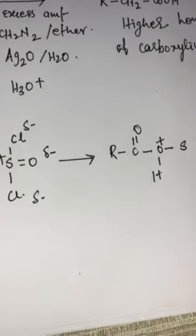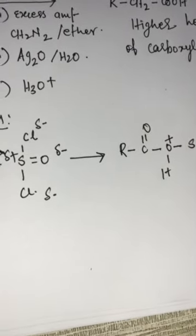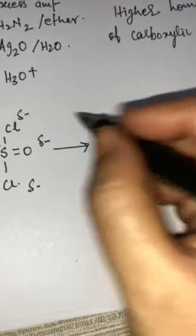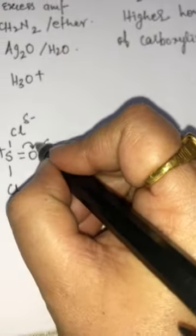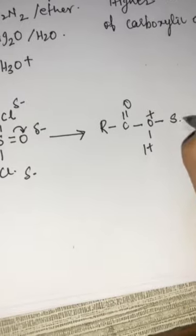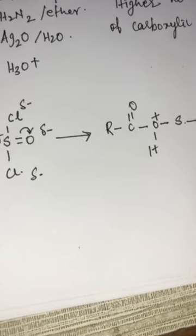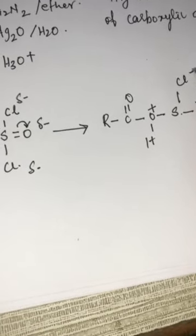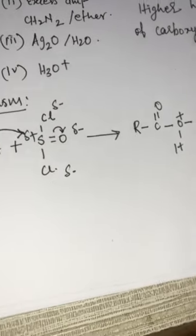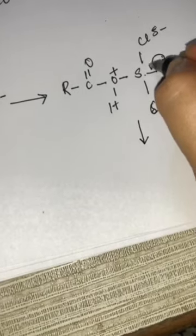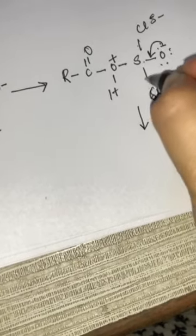Naturally, a positive charge has been developed at that site the moment the oxygen attacks. One of the bonds will shift to the oxygen atom and a negative charge has been developed. The Cl is now delta-minus. In the further reaction, this negative charge will collapse and one of the Cl will come out.